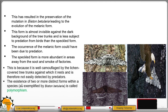The existence of two or more distinct forms within a species, as shown by Biston betularia, is called polymorphism. The word is derived from two parts: poly, meaning many or several, and morphism, meaning form — so several forms.